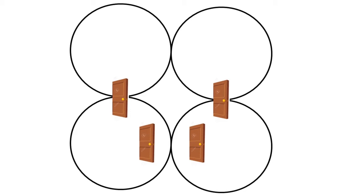Let's talk about the location of these circles. We have a top right circle and a top left circle. Our first door is going to be between the top right and bottom right circle. Our second door is going to be located between the top left and bottom left circles. Doors three and four are going to be located not in the middle of the two bottom circles but closer towards the midline or the middle of the circle.